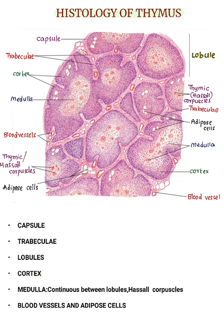Cortex. It consists of densely packed lymphocytes that do not form lymphatic nodules. You can see there are no lymphatic nodules here, unlike in the spleen, lymph node, and palatine tonsil, where you can see lymphatic nodules.